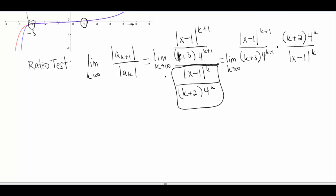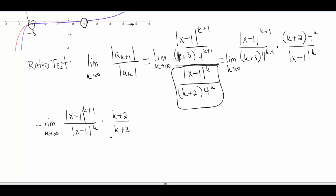This still looks like a big mess, so let's go ahead and break it apart and group like things together. We still have our limit as k goes to infinity. I've got the absolute value of x minus 1 to the k plus 1 in my numerator and the absolute value of x minus 1 to the k in my denominator — those two pieces are alike. We're multiplying all this together, so it doesn't matter how we break it apart. Then I've got k plus 2 over k plus 3, and then 4 to the k in the numerator over 4 to the k plus 1 in the denominator.